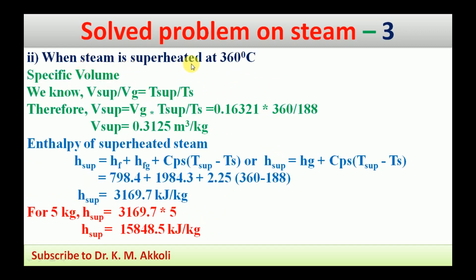For Case 2, when the steam is superheated at 360°C, the specific volume is found using the relation: v_sup / v_g = T_sup / T_s, where temperatures are in Kelvin. So v_sup = v_g × (T_sup / T_s) = 0.16321 × (360 / 188) = 0.3125 m³/kg.